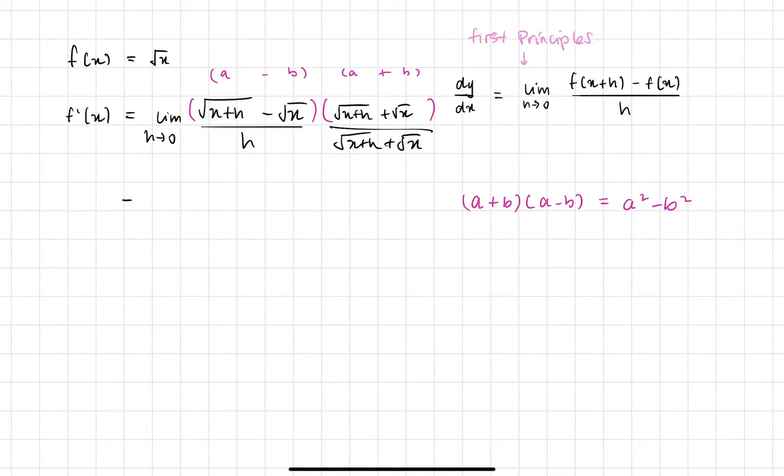Okay, so on the numerator, we should be able to get some nice looking numerator. So a squared minus b squared, right? So we have x plus h minus x. Okay, so I basically just used this one. Since we have a minus b times a plus b, we should result in a squared and then minus b squared.